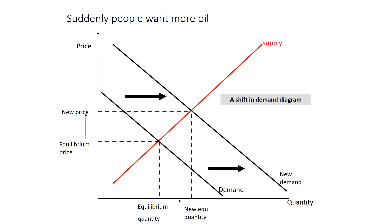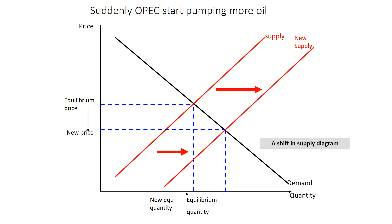Our first example: suddenly people want more oil, maybe because the country is developing rapidly. We can see the demand curve shift to the right. This causes a shift along the supply curve and we see a new higher price and a higher quantity.